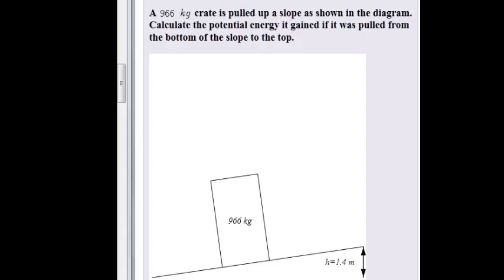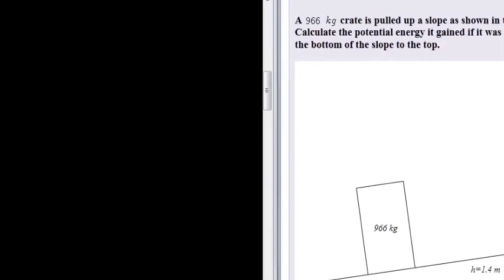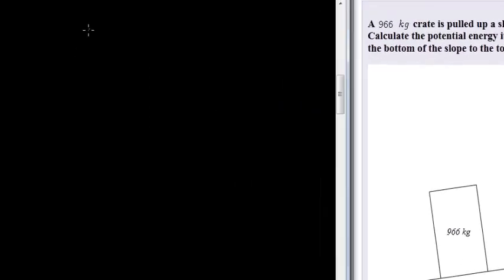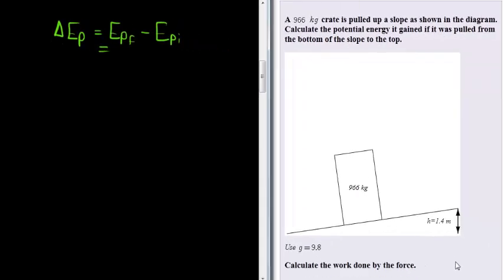So what do we need to calculate? We calculate the potential energy gained. In other words, the change in the potential energy is what we're calculating, which means it's the potential energy it has in its final position, minus the potential energy it has in its initial position. Now we don't know how high this whole diagram is to start with.